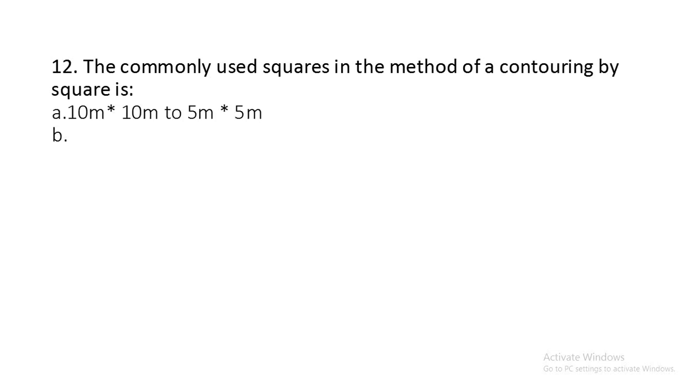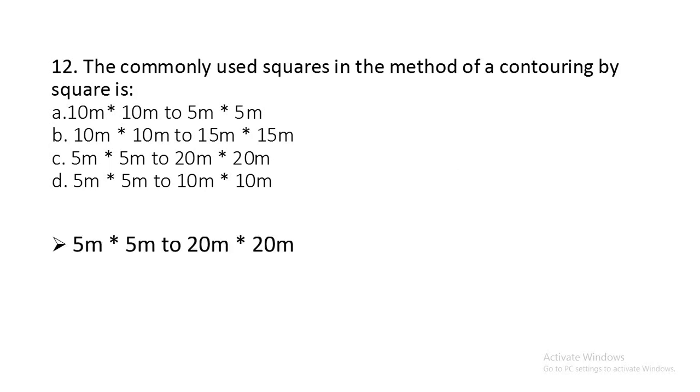Question number twelve: The commonly used square in the method of contouring by square is... The correct option is option C: 5 meter by 5 meter to 20 meter by 20 meter square is used in the method of contouring by square.